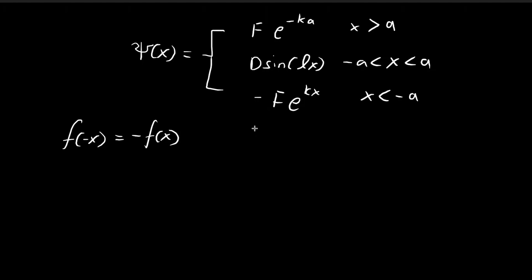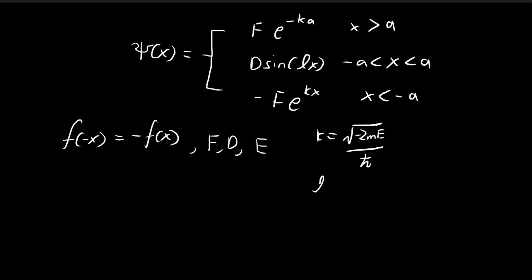Right now we have three unknowns to solve: F, D, and the energy level E, which is contained within k and l. Recall that k = √(-2mE) / ℏ and l = √(2m(E + V₀)) / ℏ.